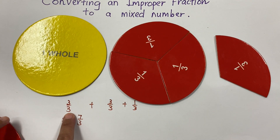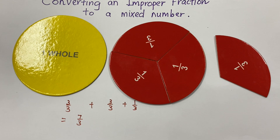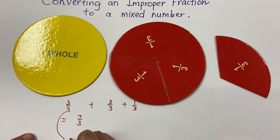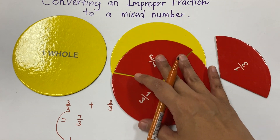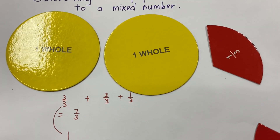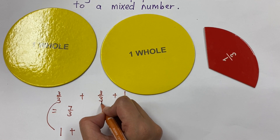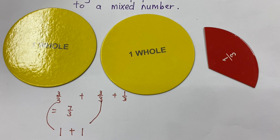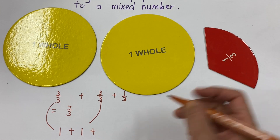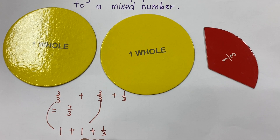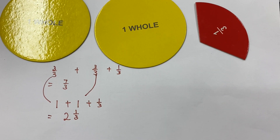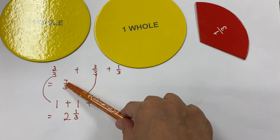...break it up into three out of three — so that's one whole. The other three out of three is one whole, and plus your one third. So it's two whole and one out of three. That's your mixed number.